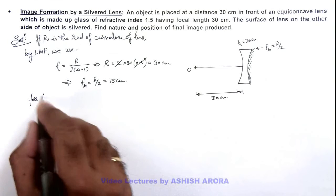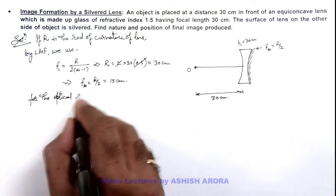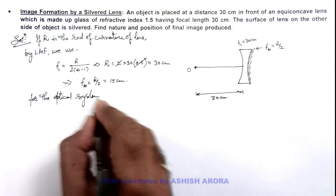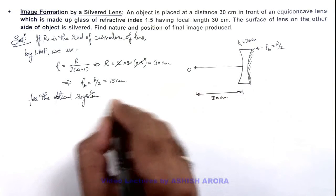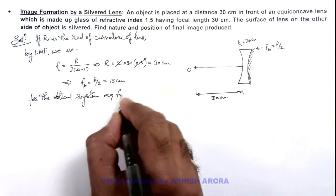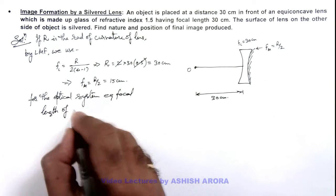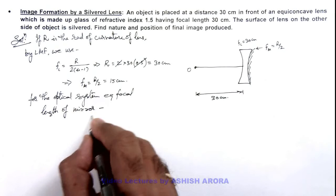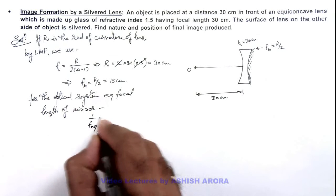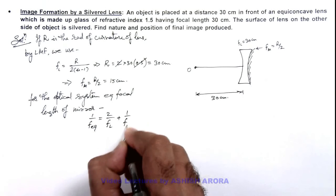For the system, or for the optical system which will actually behave like a mirror because the light is finally coming out in air, we can write for the optical system equivalent focal length of mirror can be given as 1 by f equivalent is equal to 2 by focal length of lens plus 1 by focal length of mirror.